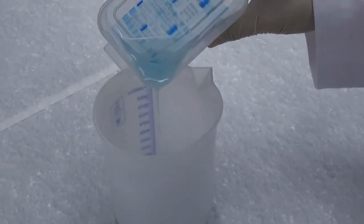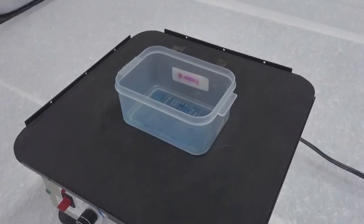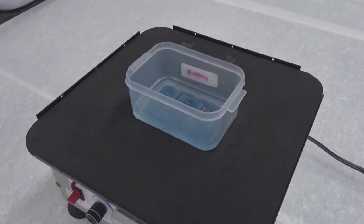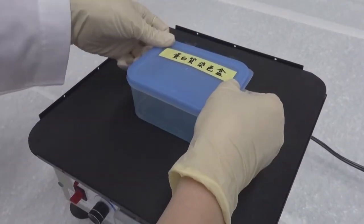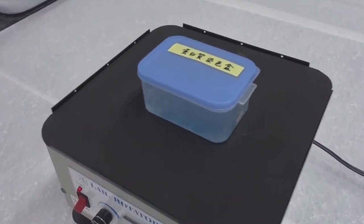Pour the liquid waste into a designated container. You may wash the gel with deionized water a few more times with shaking until the protein bands become distinct against a transparent gel background.